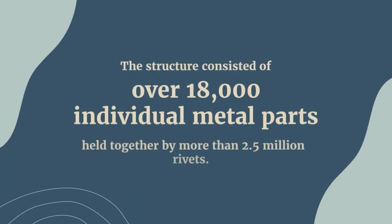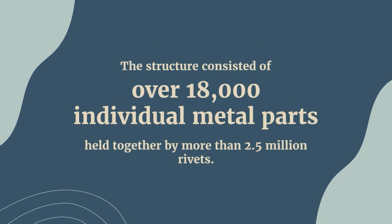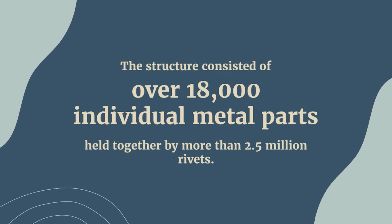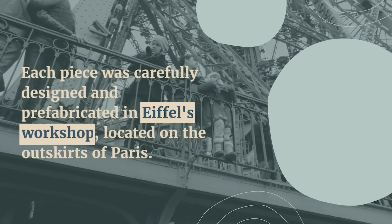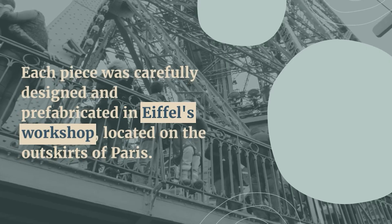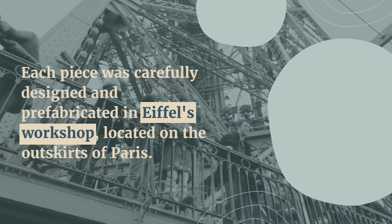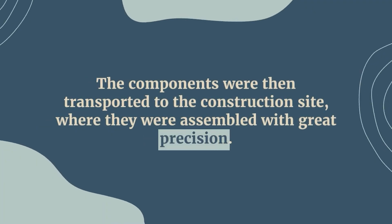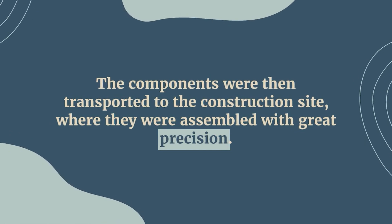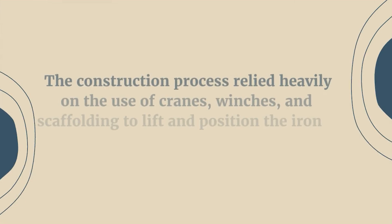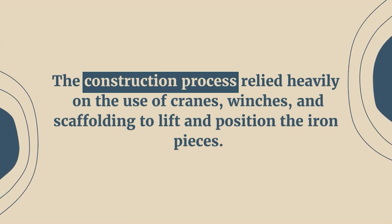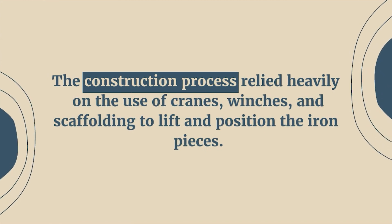The iron framework: With the foundations in place, work began on the iron framework of the tower. The structure consisted of over 18,000 individual metal parts held together by more than 2.5 million rivets. Each piece was carefully designed and prefabricated in Eiffel's workshop on the outskirts of Paris. The components were then transported to the construction site, where they were assembled with great precision. The construction process relied heavily on the use of cranes, winches, and scaffolding to lift and position the iron pieces.